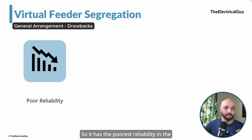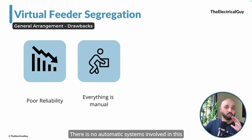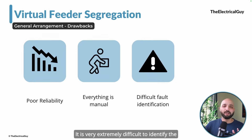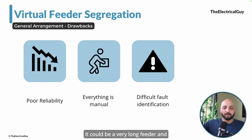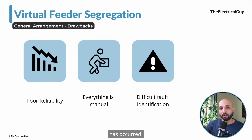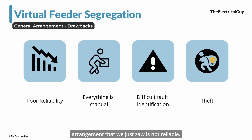This arrangement has the poorest reliability in power distribution. Everything is manual — you have to disconnect the supply and identify the fault manually with no automatic systems involved. It is extremely difficult to identify faults, and giving solutions to them is very time consuming since you don't know where along the feeder the fault has occurred. There is also a very high chance of power theft due to all these critical drawbacks.